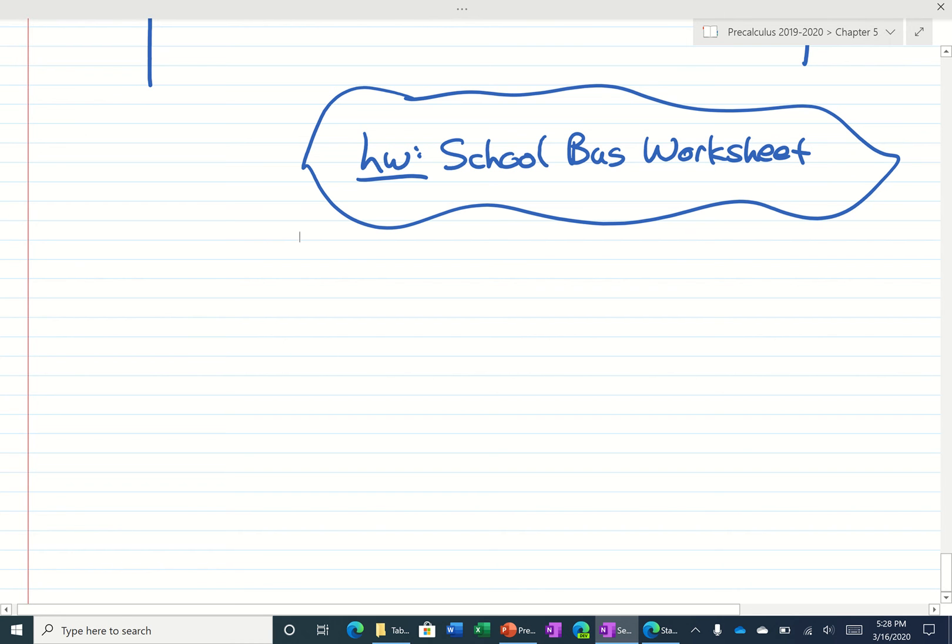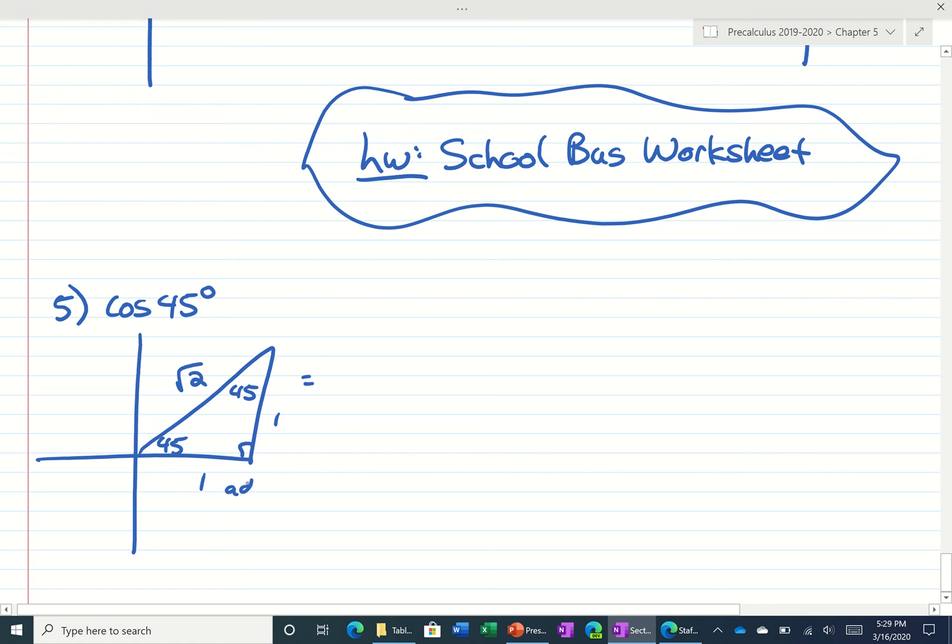I'll ask you to do the whole school bus problem, so let's take a look. Maybe I'll go right down the middle. I'll skip one. So for number five, I'm seeing the cosine of 45 degrees. Well, we know that that comes from a special 45-45-90 triangle. So 1, 1, root 2. The cosine would be adjacent over hypotenuse. 1 over root 2, which if we rationalize, we get root 2 over 2.